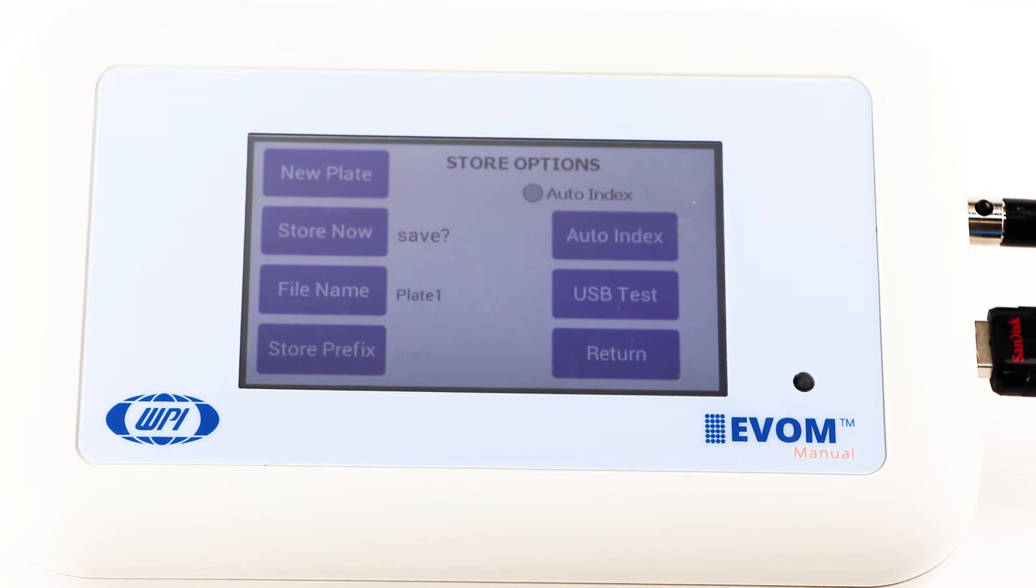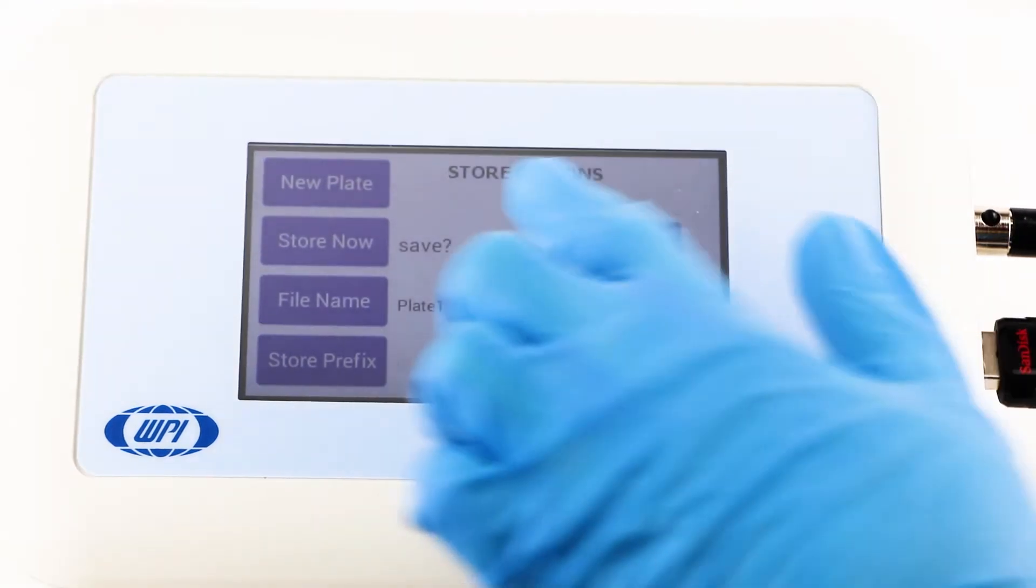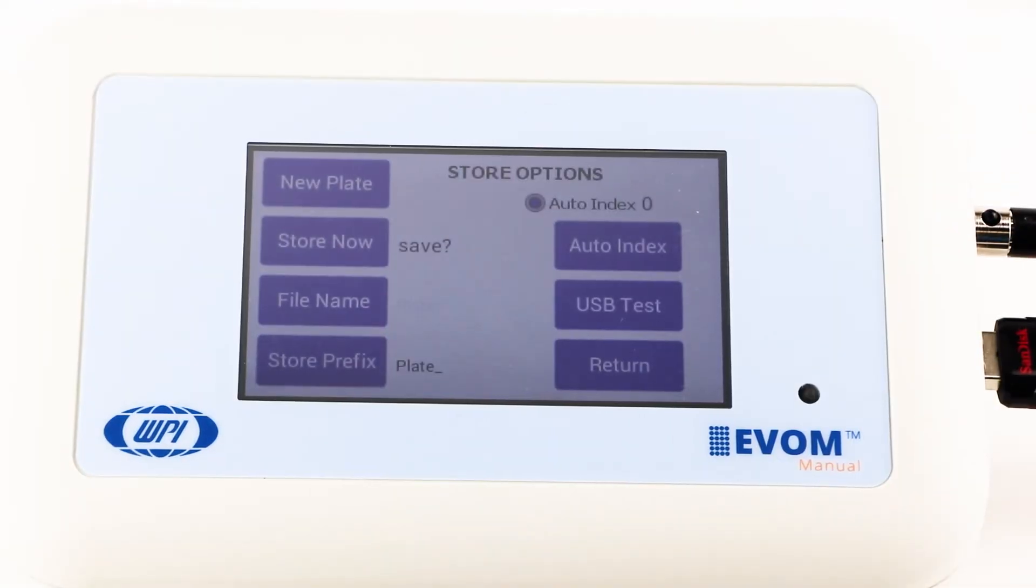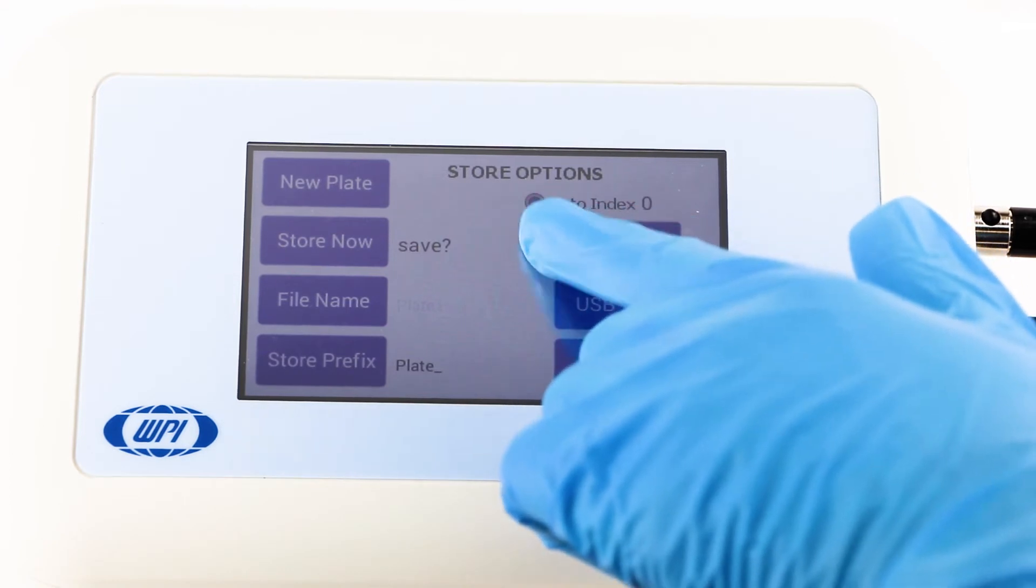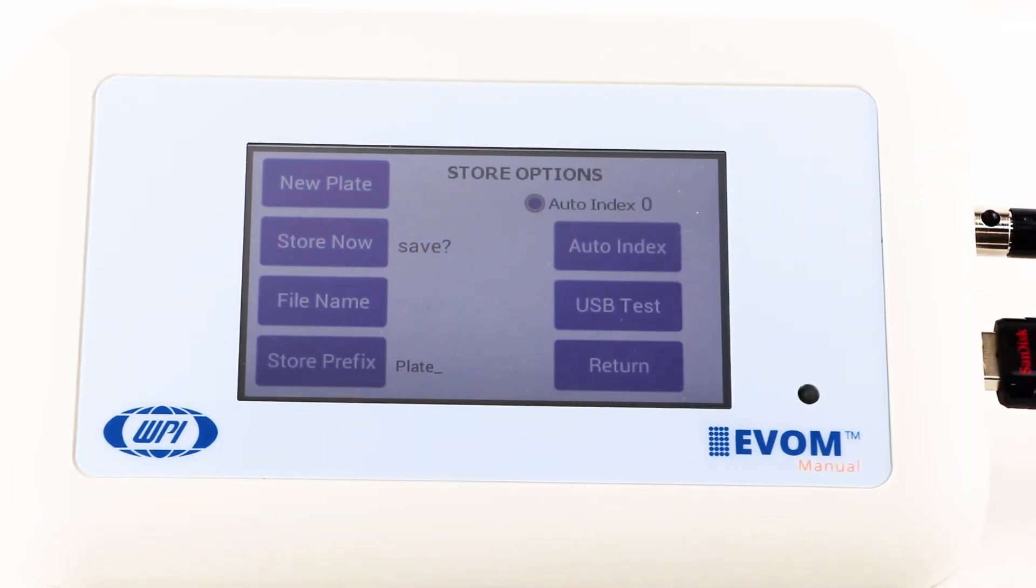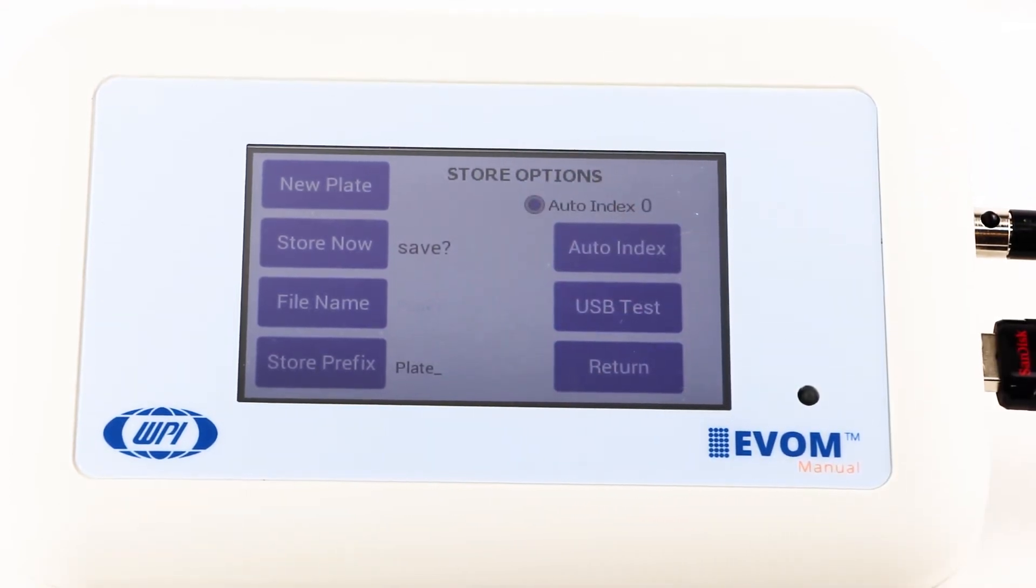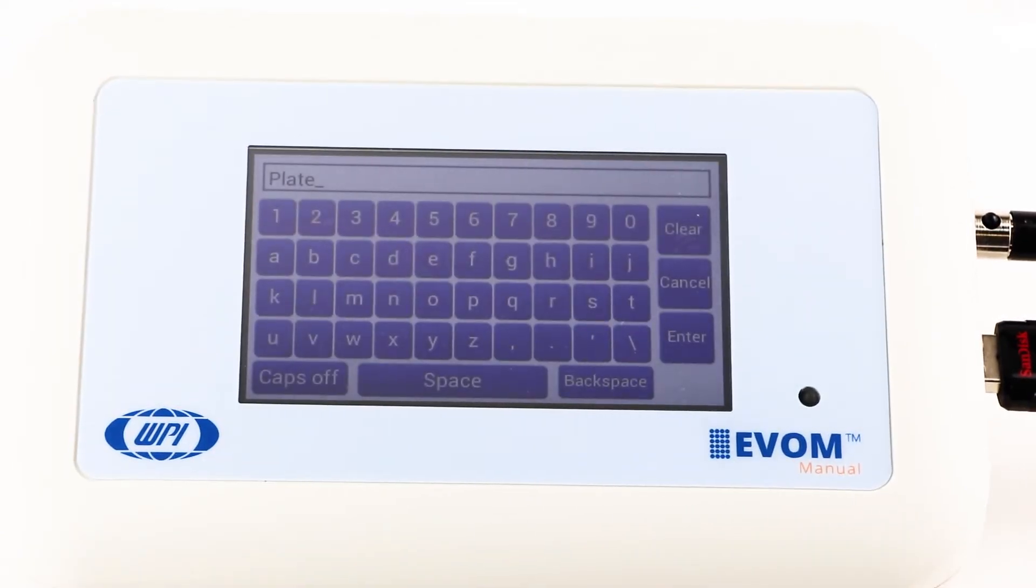To use a prefix and auto-indexing, activate the auto-index radio button. Auto-indexing sets the name to a numeric sequence with a prefix and a sequential number. Then you can press the store prefix to enter the prefix.